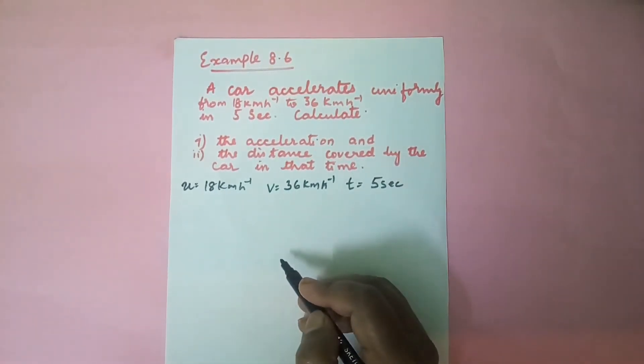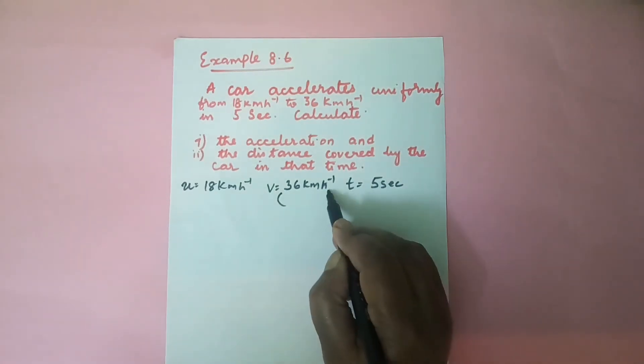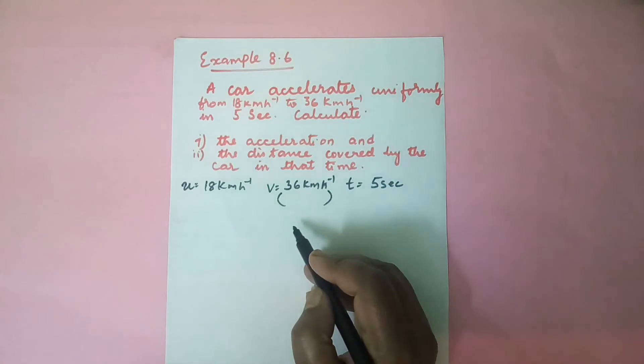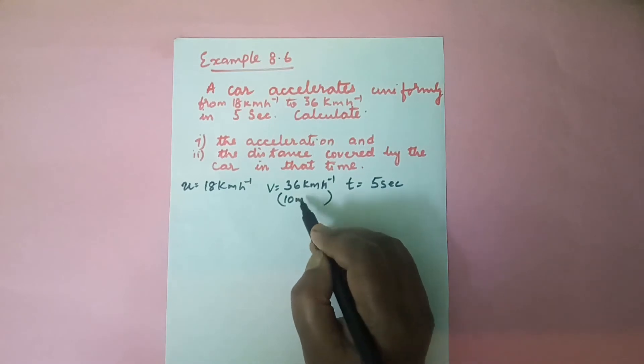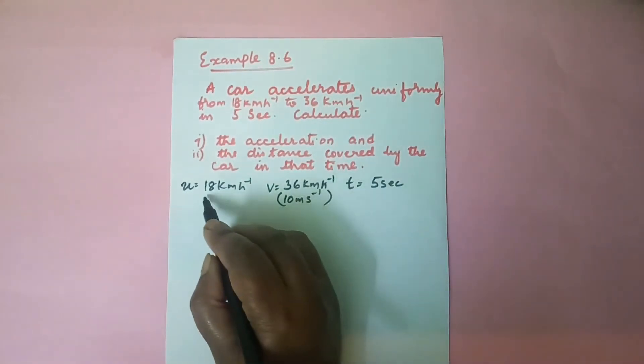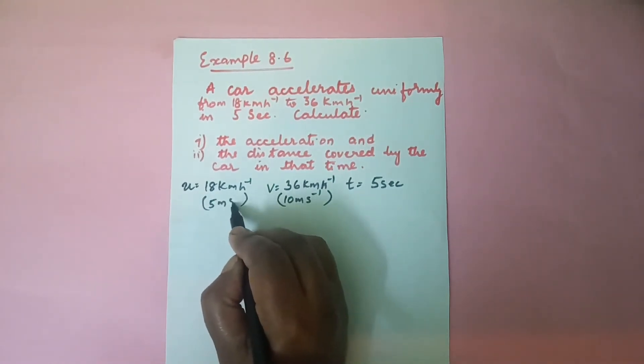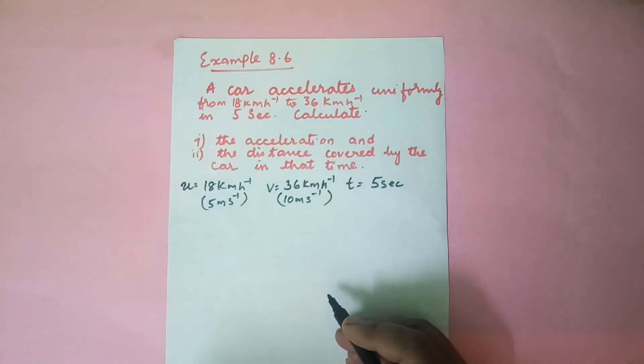Before going to the further part of the sum, let us convert this into meter per second. So when we convert this kilometer to meter per second, we get 10 meter per second. And this one we get 5 meter per second.